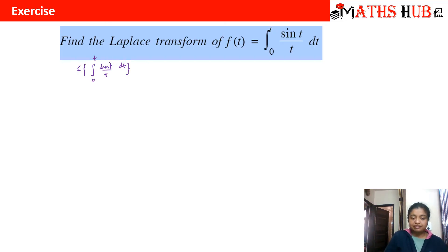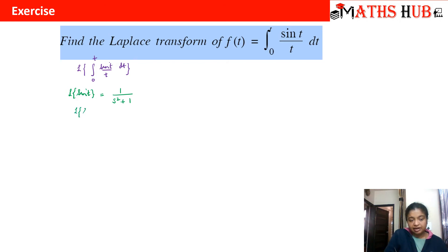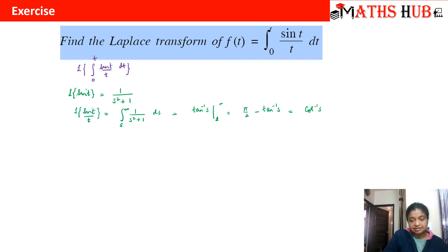The basic function is sin t, so we start with the Laplace of sin t, which is 1/(s² + 1). Now sin t is getting divided by t, so on the right hand side we have the integral from s to infinity of 1/(s² + 1) ds. This is tan⁻¹(s) evaluated from s to infinity, which is tan⁻¹(∞) − tan⁻¹(s) = π/2 − tan⁻¹(s) = cot⁻¹(s).